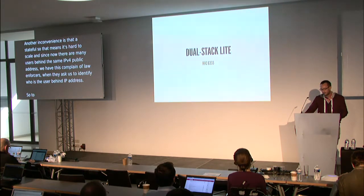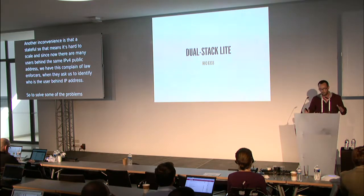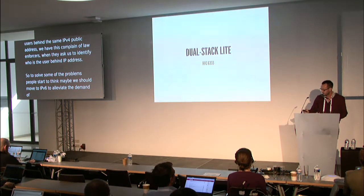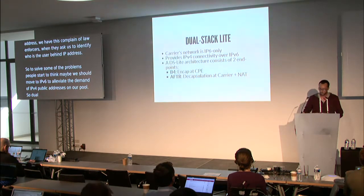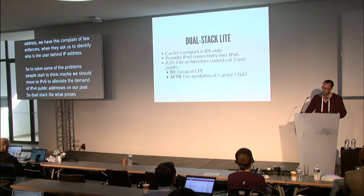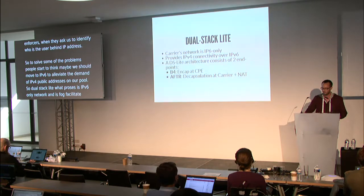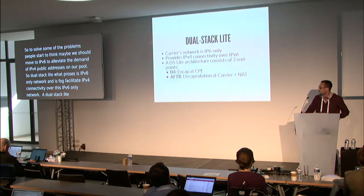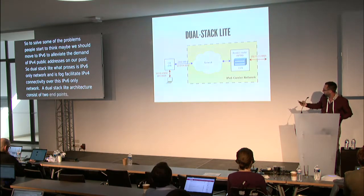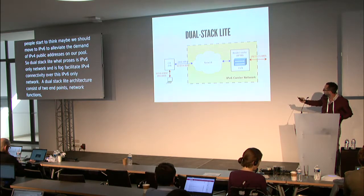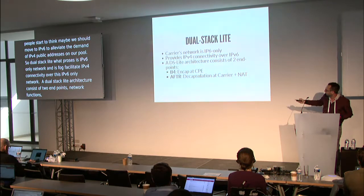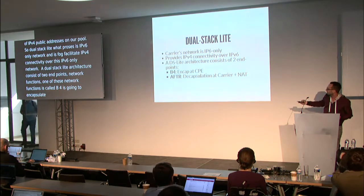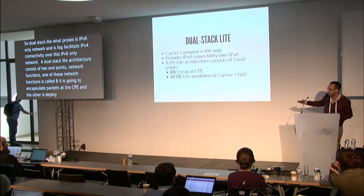To solve some of the problems of carrier-grade NAT, people started to think about moving to IPv6 to alleviate the demand on their IPv4 public address pool. Dual stack lite proposes an IPv6-only network that facilitates IPv4 connectivity over it. A dual stack lite architecture consists of two network functions: one called B4, which encapsulates packets at the CPE, and another deployed at the carrier that performs the carrier-grade NAT.